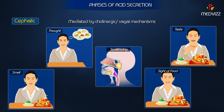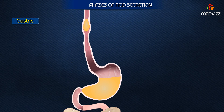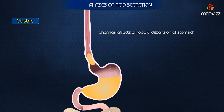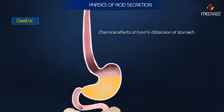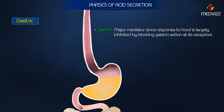The gastric phase is due to the chemical effects of food and distension of the stomach. Gastrin appears to be the major mediator, since the response to food is largely inhibited by blocking gastrin action at its receptors.